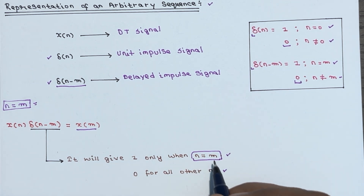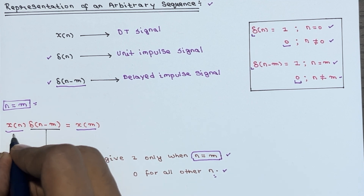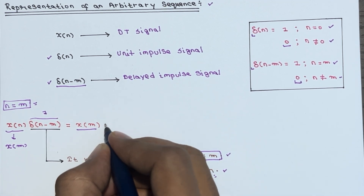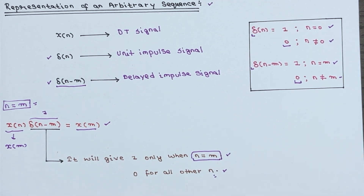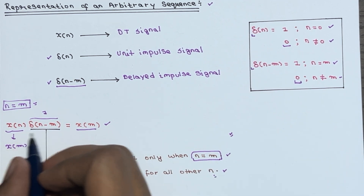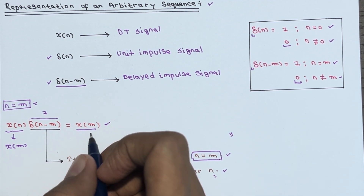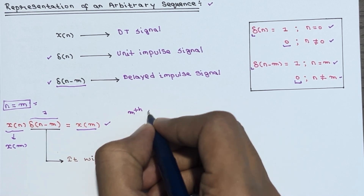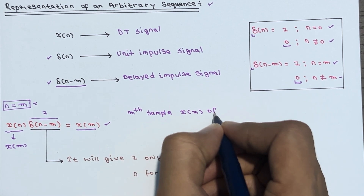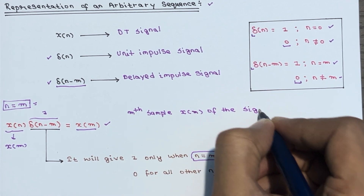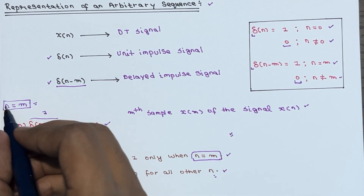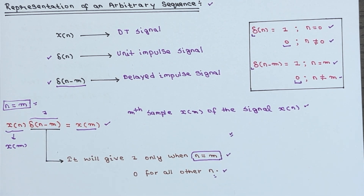We will get an output at the instance n equals m. At that point, x(n) becomes x(m) and δ(n-m) becomes 1, so x(m) times 1 equals x(m). Furthermore, at n equals m, the value of the product corresponds to the mth sample of the signal x(n), because we are standing at the n equals m position.